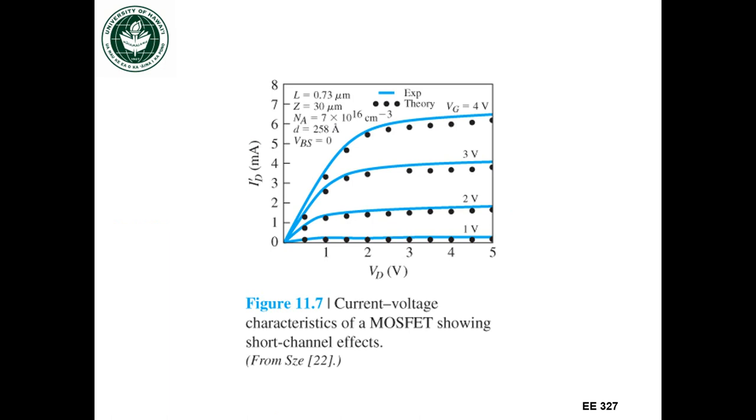And that's reflected in, if we look at the drain current as a function of drain to source voltage for different gate voltages. These are different curves for different gate voltages. So you can see that,